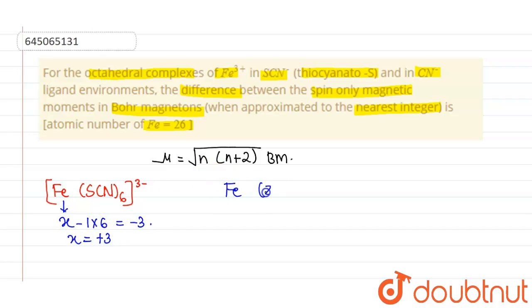Fe has atomic number 26. The outer electronic configuration is 3d6 4s2. As this Fe is in plus 3 oxidation state, this will be 3d5.